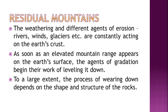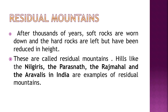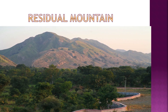Last are residual mountains, which are formed due to weathering and different agents of erosion like rivers, winds and glaciers constantly acting on the earth's crust. As soon as an elevated mountain range appears, agents of gradation begin leveling it down. After thousands of years, soft rocks are worn down and hard rocks are left but reduced in height — these are called residual mountains. The Nilgiris, Parasnath, Rajmahal and Aravallis in India are examples of residual mountains.